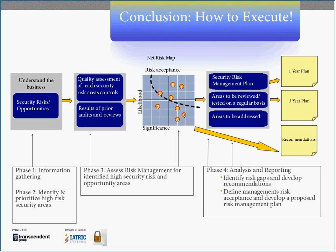Phase three entails assessing the quality of controls for the risk items and generating a net risk map, which will be used in the last phase of the reporting. It's important for management to identify their risk acceptance level, and that should also be formally documented. A risk management plan should be generated for addressing the risk items remaining above the risk acceptance level, along with further reducing other risks.